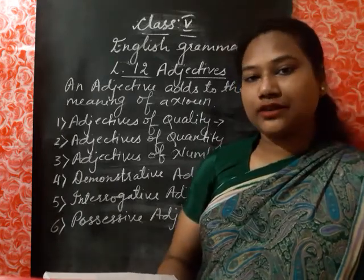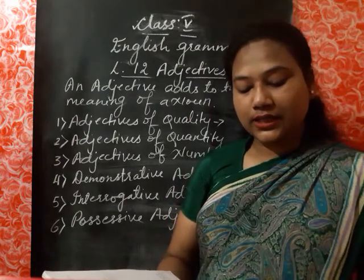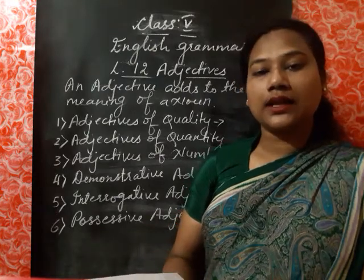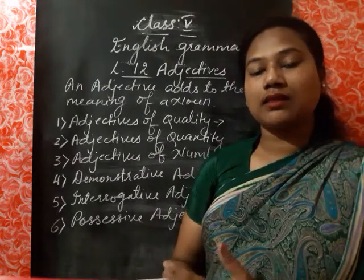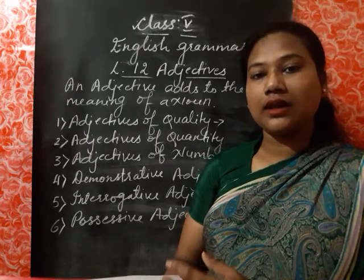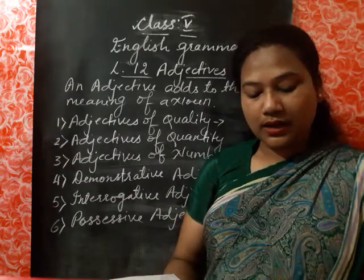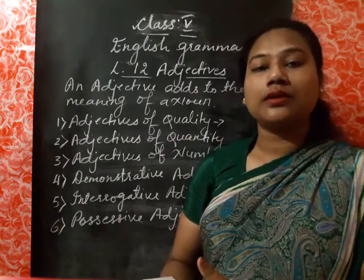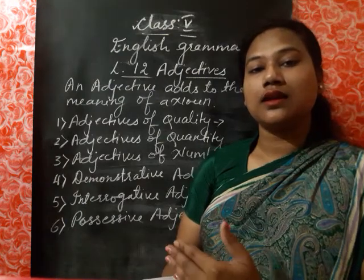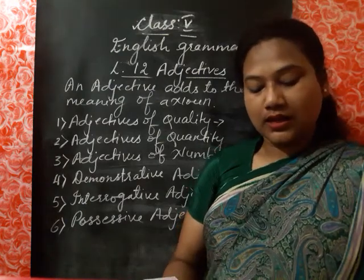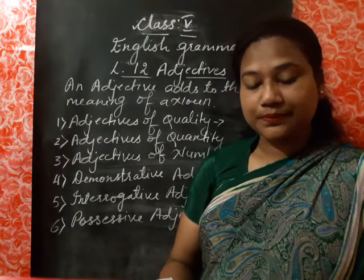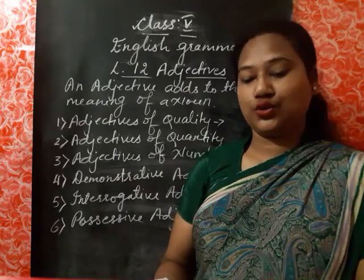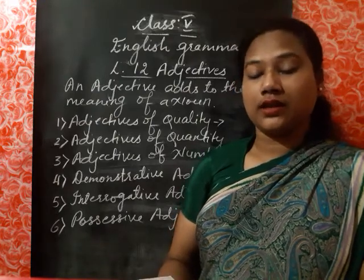The third one is adjectives of number. Adjectives of number tell us how many nouns or pronouns there are — they display the number. For example, 'I have many friends' — here 'many' shows the number. 'She drank two bottles of cold drink' — 'two bottles' is showing the number. So adjectives of number tell how many.